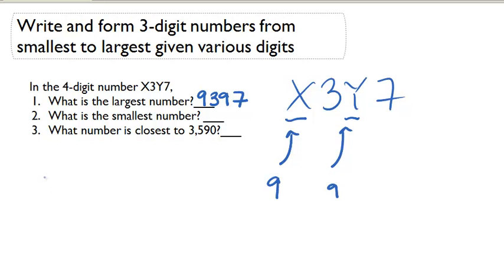What's the smallest number? So we have X, 3, Y, 7. We can put a zero in here, a zero in here. That's giving us 307.